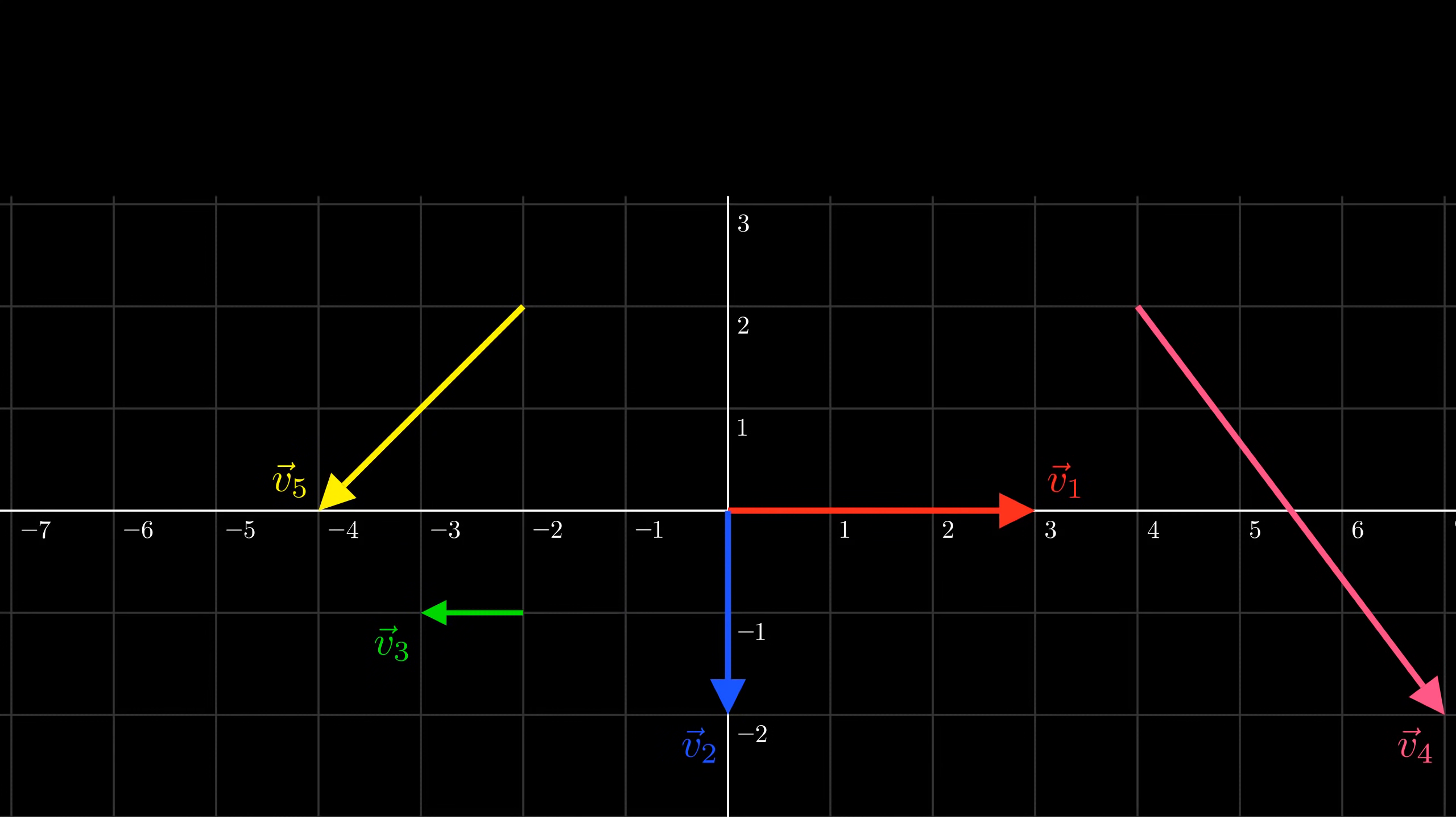Let's do an exercise. Here are a bunch of vectors. What is the length of each of these vectors? Please pause the video and try to answer this question. So, the first vector should be easy. It is along the x-axis and you can see that it ends at 3, so the length is 3.